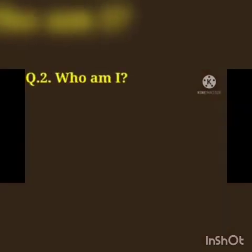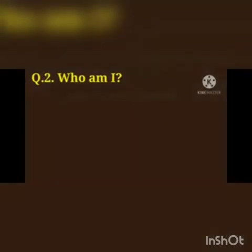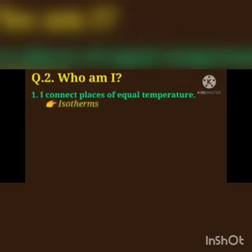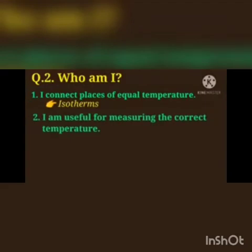Question number 2: Who am I? First one: I connect places of equal temperature. Answer is isotherms. Second one: I am useful for measuring the correct temperature. Answer is simple thermometer.